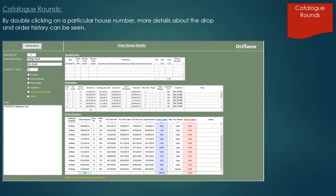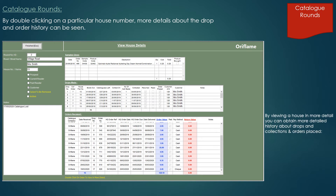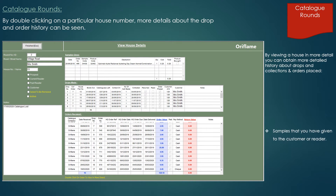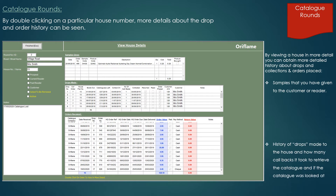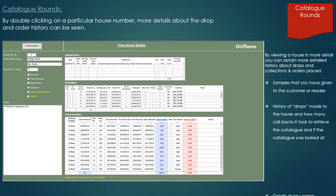By double clicking on a particular house number, more details about the drop and order history can be seen. Samples that you have given to the customer or reader. History of drops made to the house, how many callbacks it took to retrieve the catalogue, whether the catalogue was looked at, and details of any orders received.